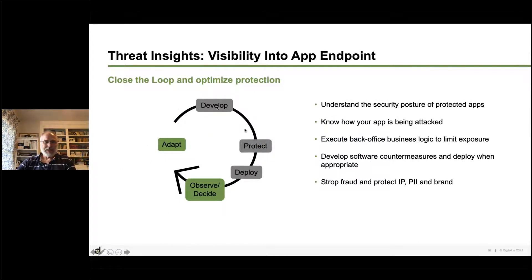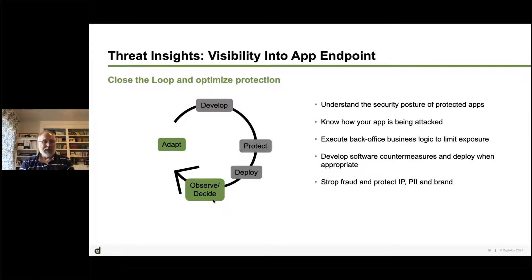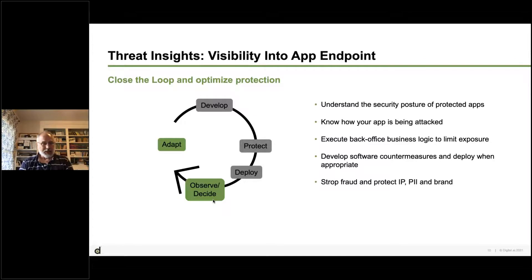This helps us close the loop so that by getting information back from the threat insights and threat analytics as your app is running, you can understand: is it being attacked, if so by whom, if so how, and then decide what to do to combat that. If your app is being attacked but it's so low level that it's not bothering you, you may just want to continue. If it's being attacked more vigorously, you may want to make some changes, or if you decide that the IP involved or the access to backend data is a big enough threat, you may want to move from this product up to one of the premium protection products.